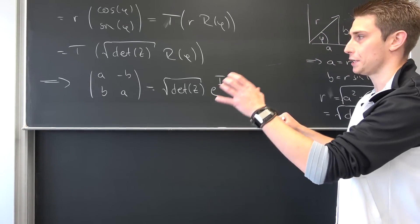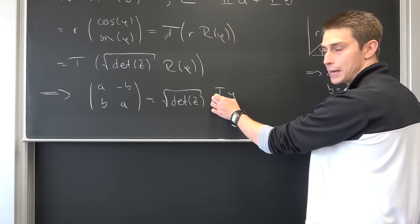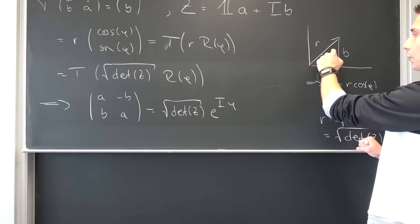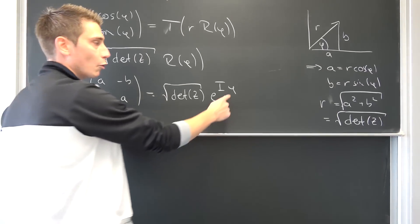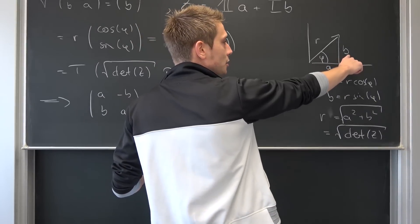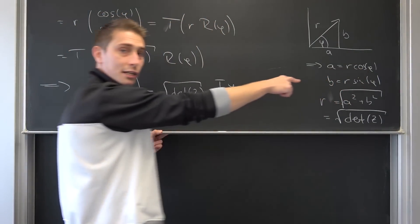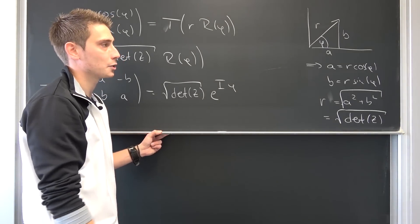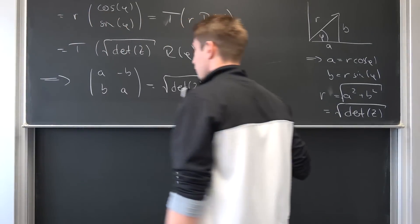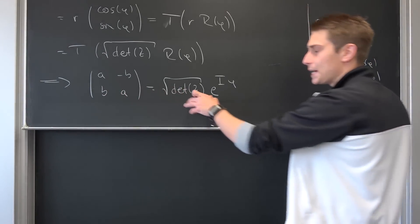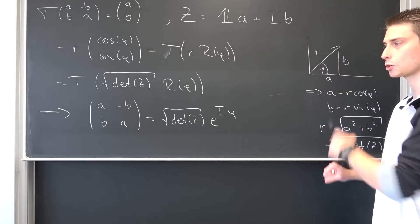Now each and every complex number can be expressed in the form r times e to the imaginary unit times phi, where phi is the angle between our vector and the x-axis — the argument of the complex number. More formally, phi is the inverse tangent of b over a, which you can derive by solving the system of equations for sine over cosine. Each and every complex number is basically just a rotation of a vector in the plane — this is what complex numbers actually are.